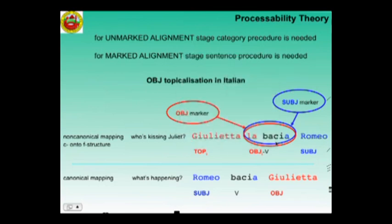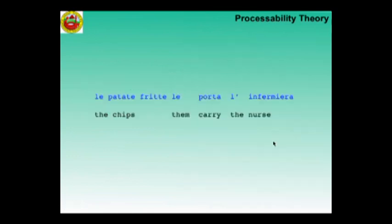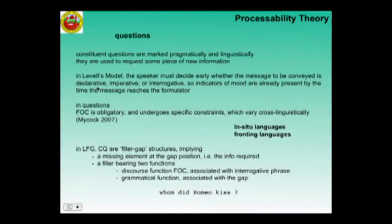Italian, as I said, is a head-marking language, so it marks the object with an object clitic on the verb. The subject being occupied by the first position, it then comes after the verb, and you have the subject-verb agreement marked on the verb. So at this stage you can say le patate fritte le porta l'infermiera, with this coreferential clitic signaling and resolving the functional uncertainty of the topical element.